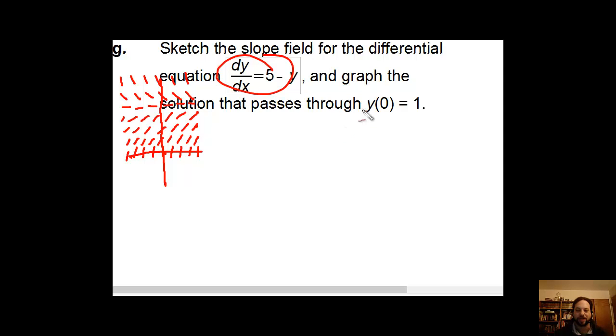It wants us to graph the solution that passes through the point (0, 1). The point (0, 1) is right here, and it looks like it's going to come from below, rise up quickly, and then kind of even out. My guess is that this is going to be asymptotic to the line y equals 5, maybe something like that. Well, we can go ahead and actually find out for ourselves what's going to happen here.